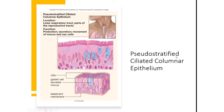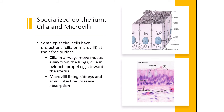Pseudostratified ciliated columnar epithelium looks like it has multiple layers, but it does not — pseudo means fake, so it appears stratified but isn't. These cells have cilia on them and are found in your airway and reproductive tracts. Although it looks like there are multiple layers of nuclei, when you trace the outline of each cell, all of them actually make contact with the basement membrane. Some specialized epithelium also has microvilli — folds that increase absorption surface area, found in the kidneys and small intestine.